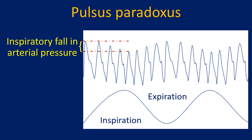In a patient being monitored in the Intensive Care Unit, the respiratory fluctuation can be seen in pulse oximetry tracing. If there is an arterial pressure line, it is very easy to document the level of paradox.